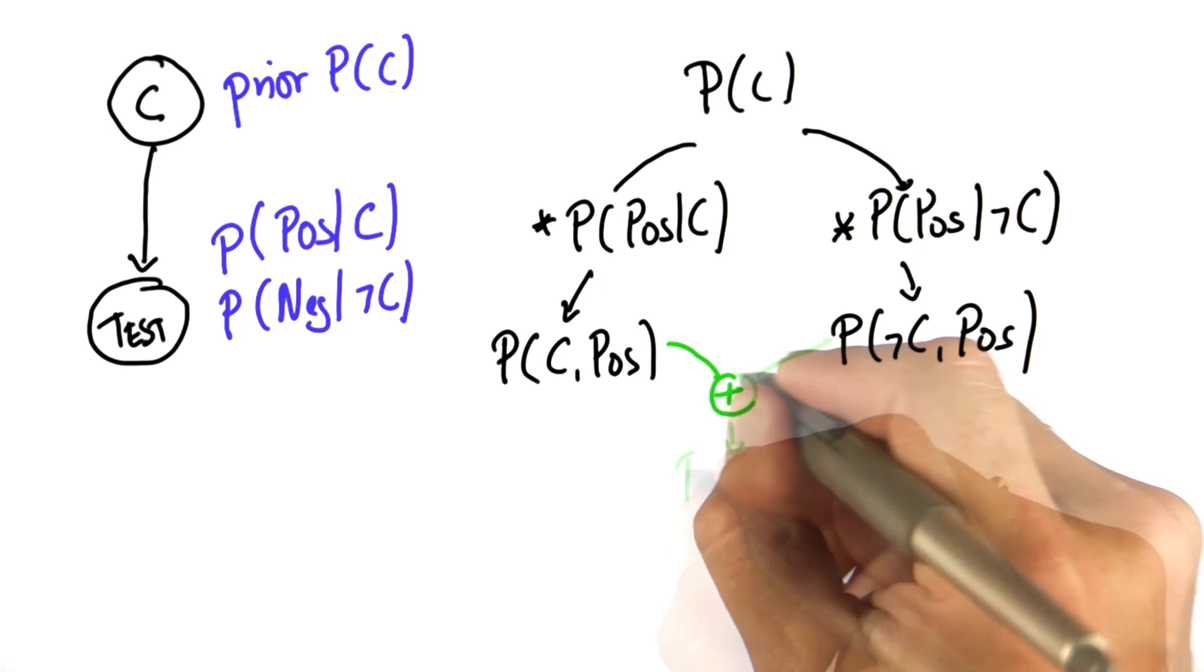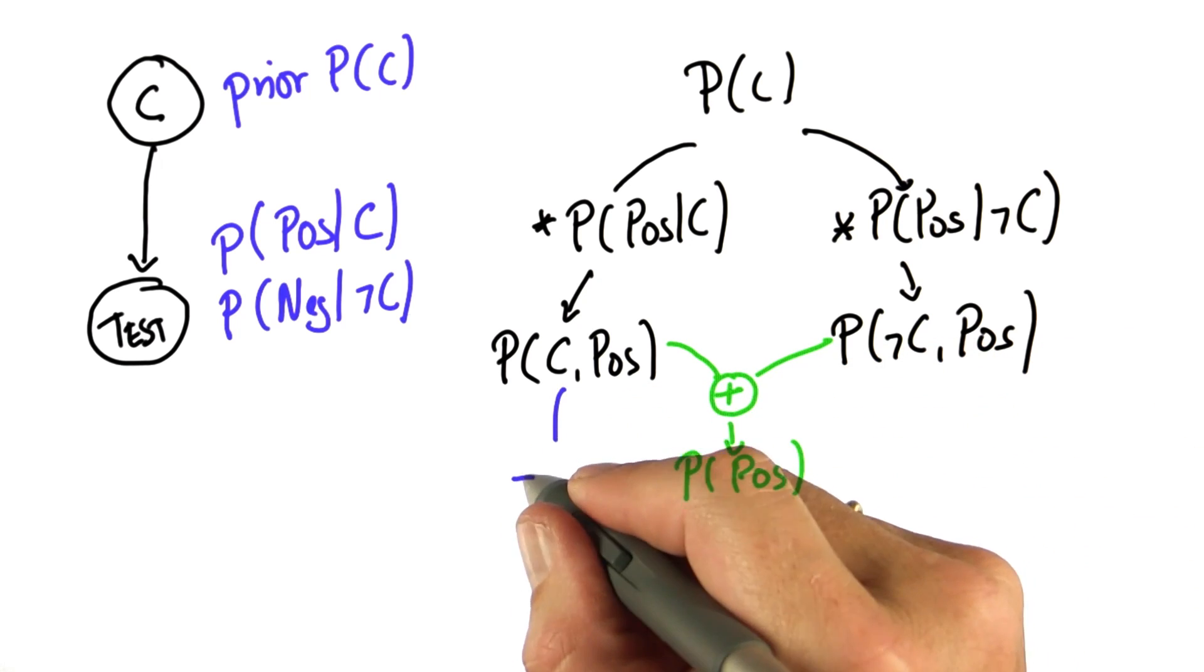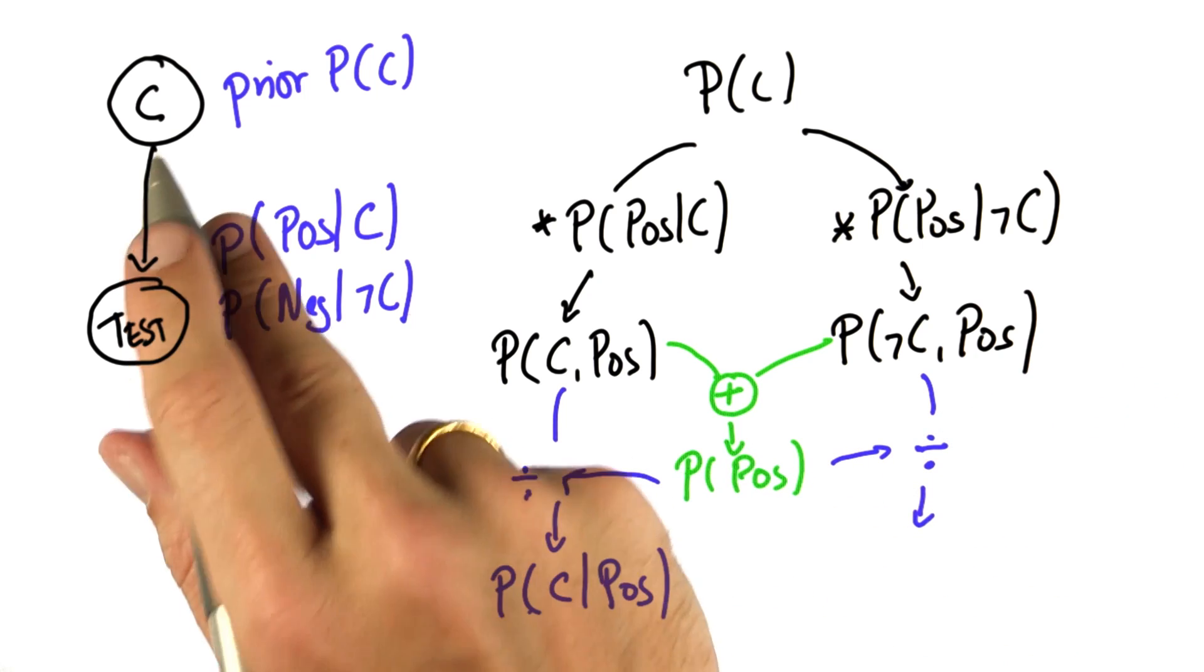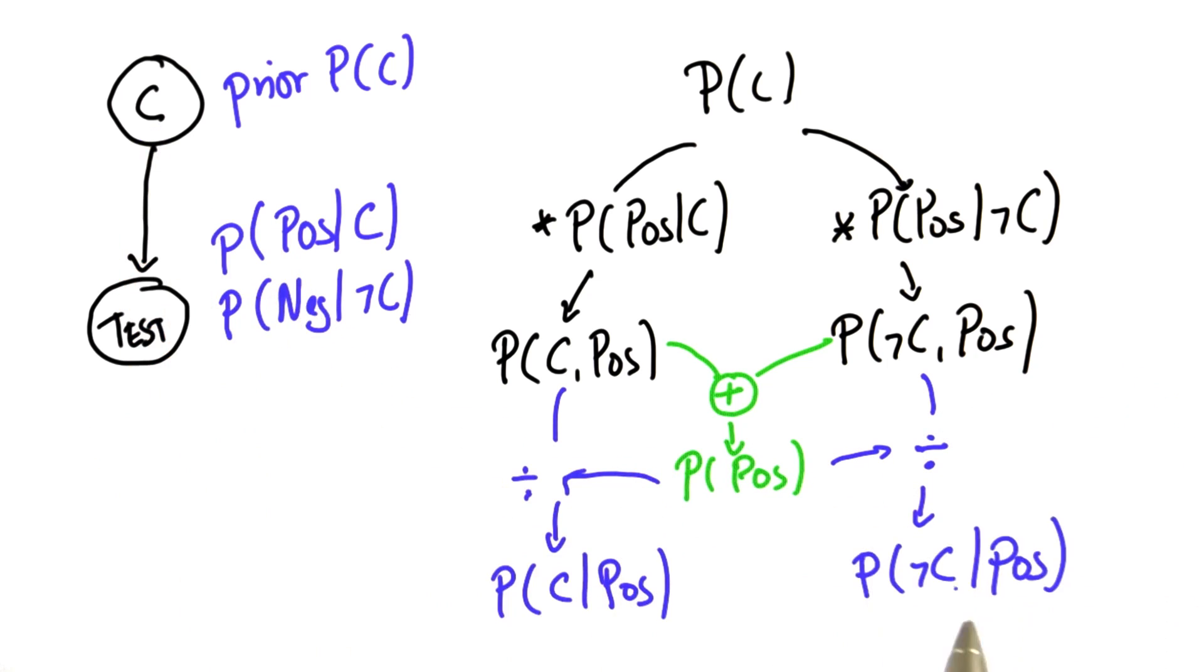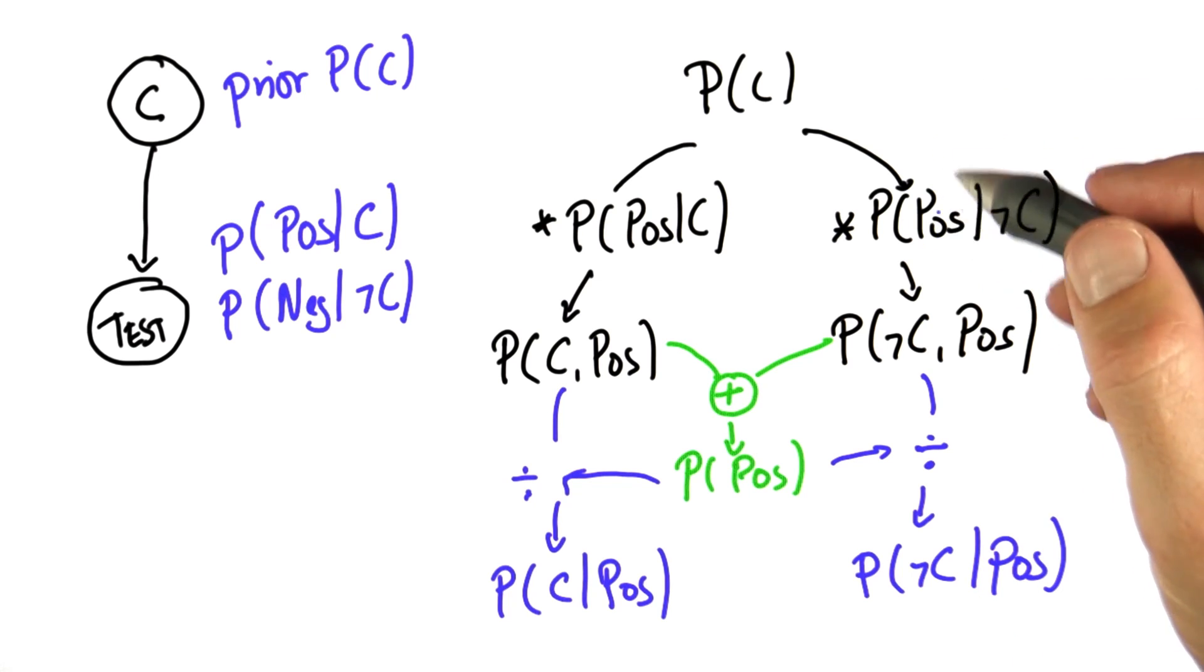We add those two things up, and it gives us a new variable, and then we divide these to arrive at our best estimate of the hidden variable, c, given our test result. And in this example, I use the positive example as a test result, but you might do the same with the negative example.